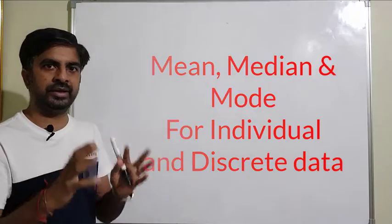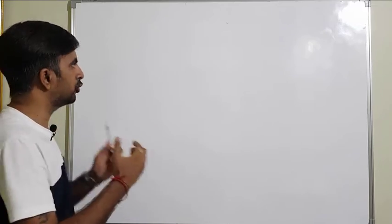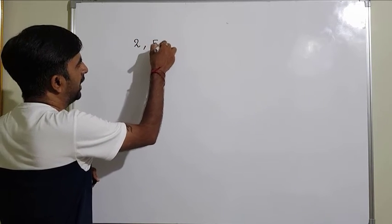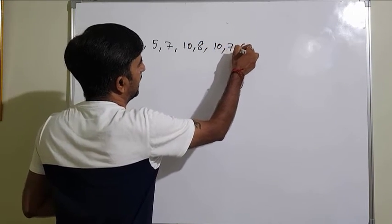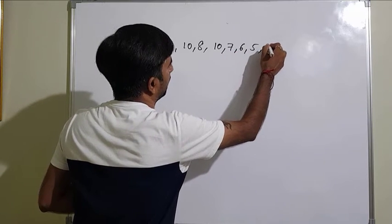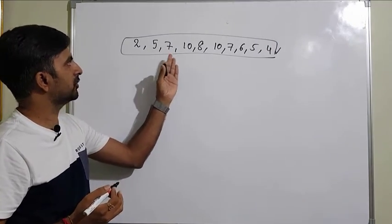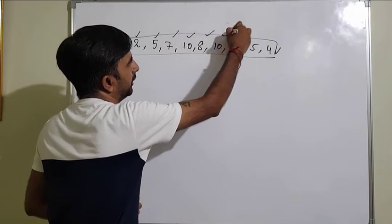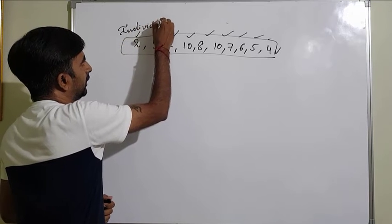Suppose I am taking a test of 10 students in a class and the test is of 10 marks. If the students are getting different marks, I can write down directly: one student is getting 2, 5, 7, 10, one is getting 8, again one is getting 10, 7, 6, 5, and 4. These are the marks obtained by 10 students. Since I gave individual marks of all the students, this type of data is called individual data.